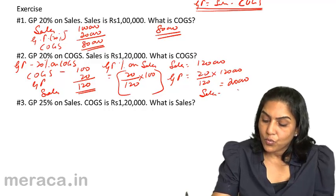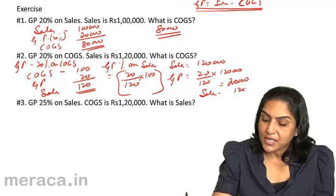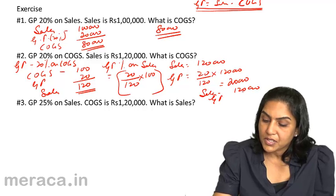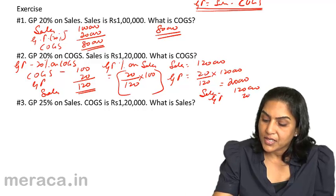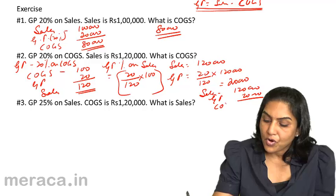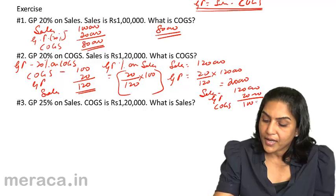Sales is 1 lakh 20,000, profit is 20,000, therefore cost of goods sold is 1 lakh.